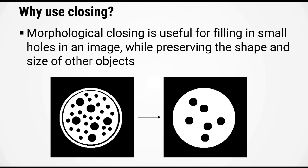So why would you want to use morphological closing? Well morphological closing is useful for filling in small holes in the image while still preserving the shape of other objects. So I hope that you've seen through this video that morphological opening and closing are very useful functions that you can use to refine your masks.